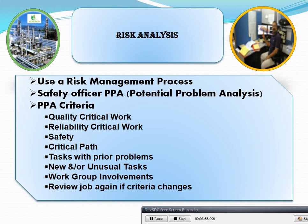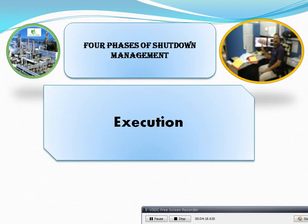Risk outline: use a risk management process. Safety officer, PPA (potential problem analysis) criteria: pointing criteria, critical work, reliability, safety, tasks with barriers or problems, new or unusual tasks, work group involvement. Review jobs against criteria, and if criteria change, update accordingly.